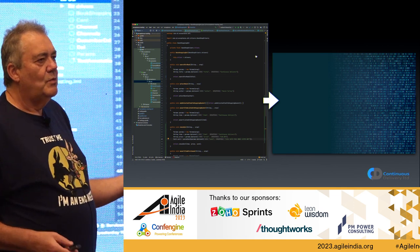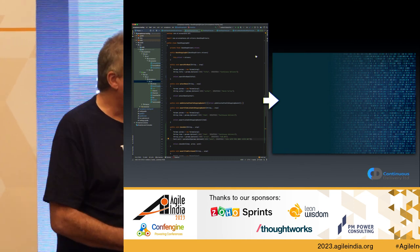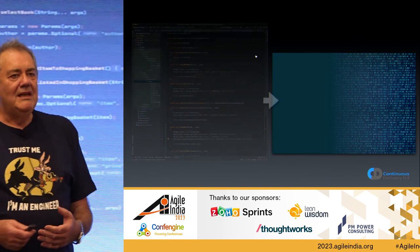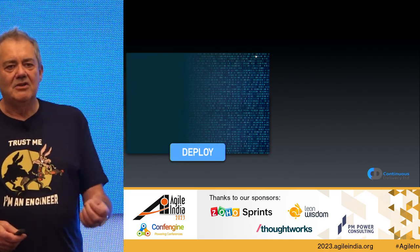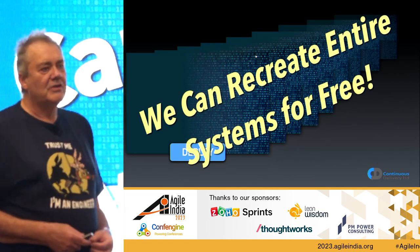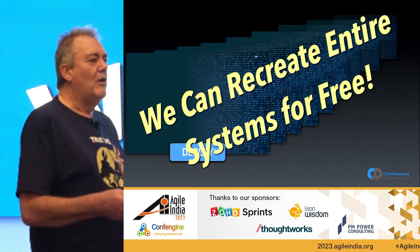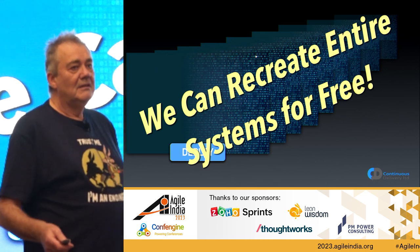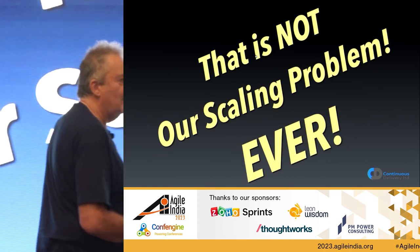Our problem is very different. We develop software — we crystallize ideas into a form that can be executed by a computer, and the result is a stream of bytes. One unique thing about a stream of bytes is that we can reproduce it essentially at zero cost, as many times as we like. So we never have a production problem in the sense of physical things. When we talk about scaling up, we're talking about scaling up the way we think about it.